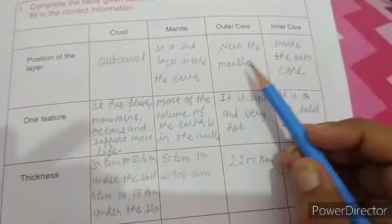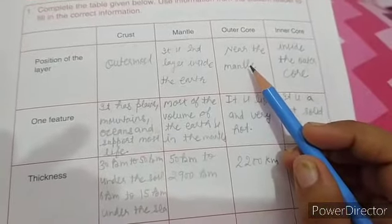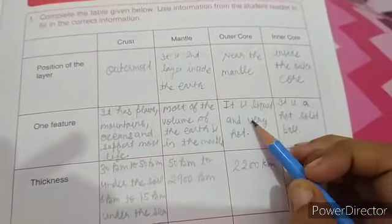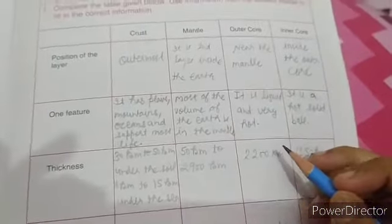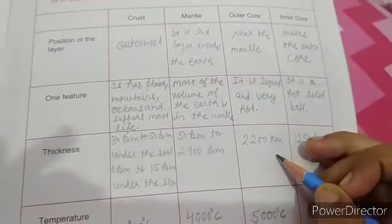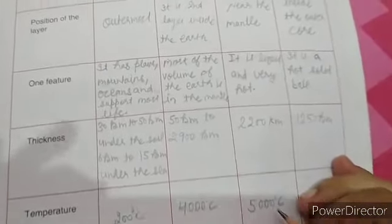Outer core. This is third layer. It is liquid and very hot. The thickness is 200 km. Temperature is 5000 degree Celsius.